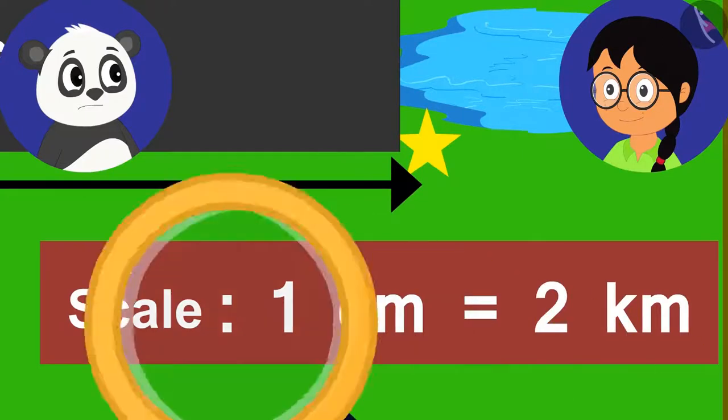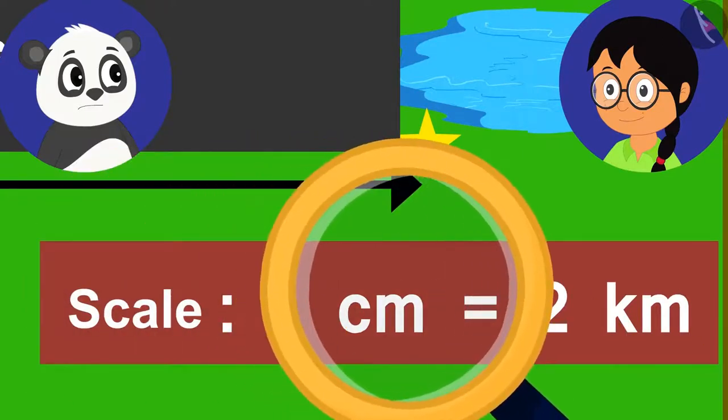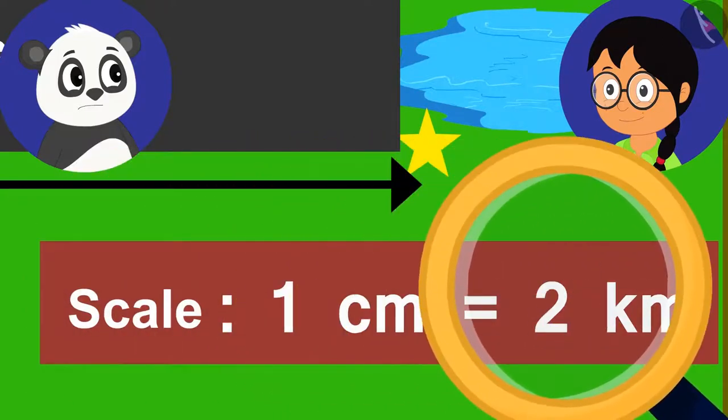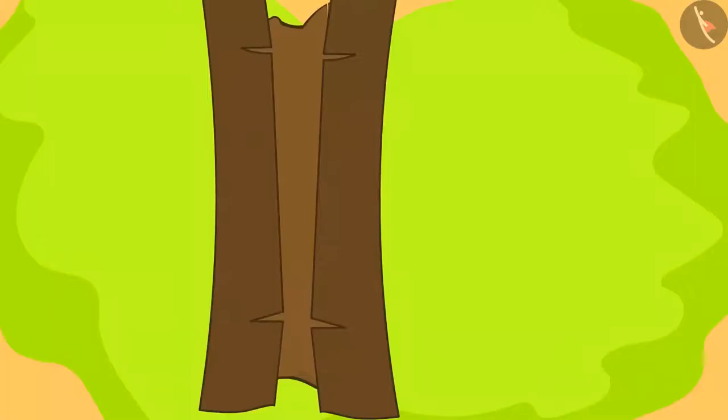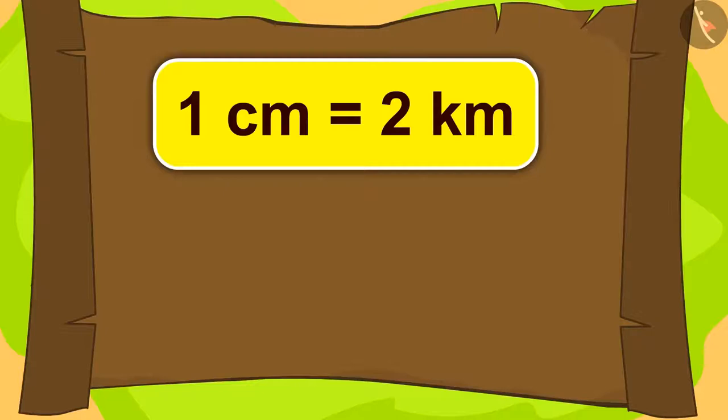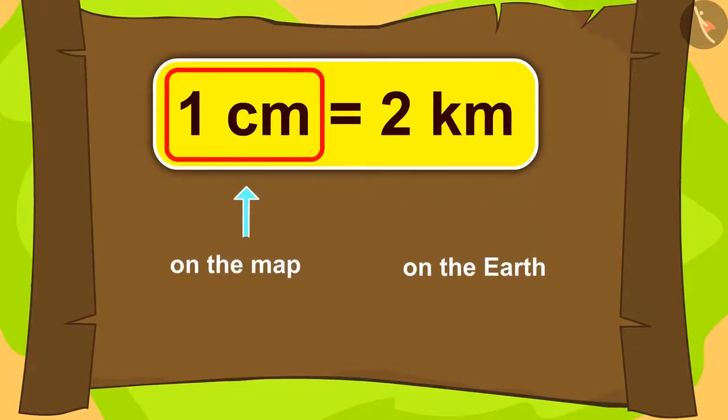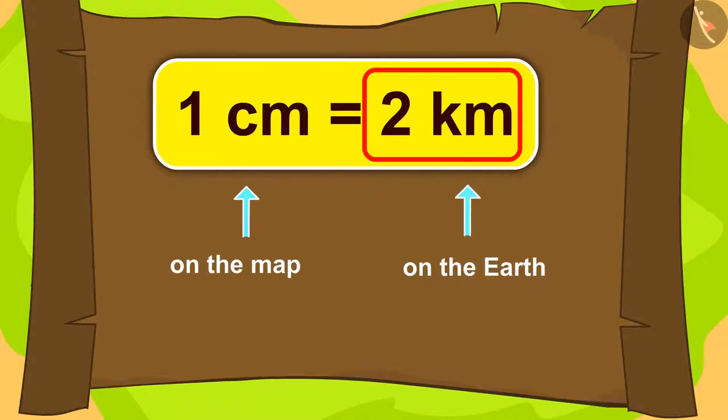As written on this map, 1 cm equals 2 km. What could it mean? This means that 1 cm of map is equal to 2 km on the earth.